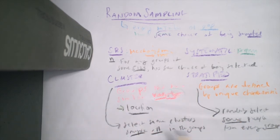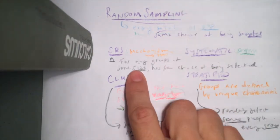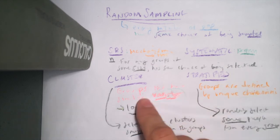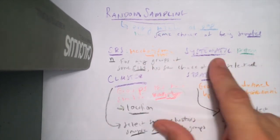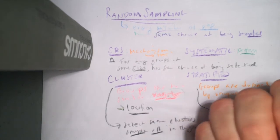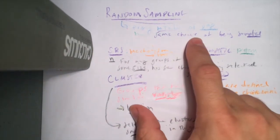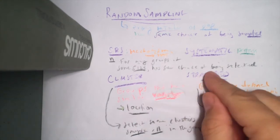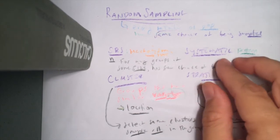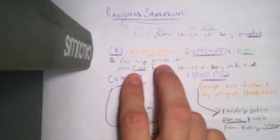Now let's revisit the definition of SRS: for all groups of the same size, they have the same chance of being selected. Is that true for these other techniques? Think about systematic sampling — say you pick every third person. Is there any chance that you and the person standing next to you will be in the same sample? Absolutely not. Each of you has the same chance of being selected individually, making it random, but it's not an SRS because the group of the two of you has no chance of being picked.